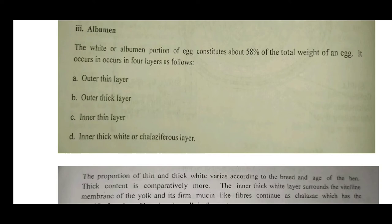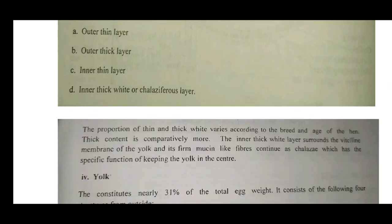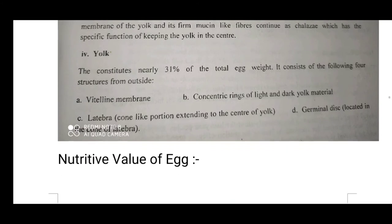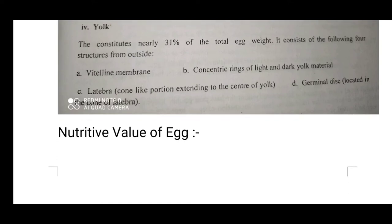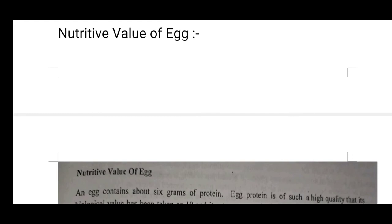Albumen occurs in four layers: outer thin layer, outer thick layer, inner thin layer, and inner thick chalaziferous layer. The yolk constitutes nearly 31% of total egg weight and consists of four structures from outside: vitelline membrane, concentrated rings of light and dark yolk material, latebra — a cone-like portion extending to the center — and the germinal disc located in the cone of the latebra.